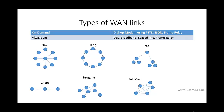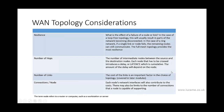WANs are characterized by point-to-point or point-to-multipoint links, which can be combined to make a variety of topologies. Note that star and chain topologies are special cases of the tree topology — a loop-free network. The choice of topology is often influenced by the technology available, the options offered by the telecommunication service providers, and distances involved. The four main WAN topology considerations to be aware of are: resilience, number of hops, number of links, and connections to node.